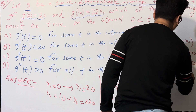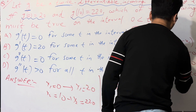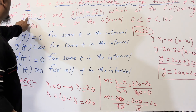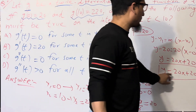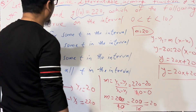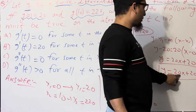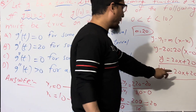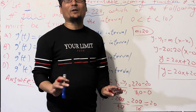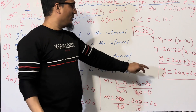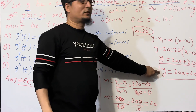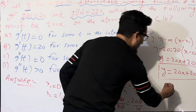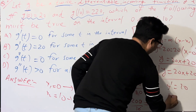We get y equals 20x plus 20. We can verify: at x equals 0, y equals 20 - that matches G(0) equals 20. At x equals 10, y equals 200 plus 20 equals 220 - that matches G(10) equals 220. So the first derivative G prime is equal to 20.